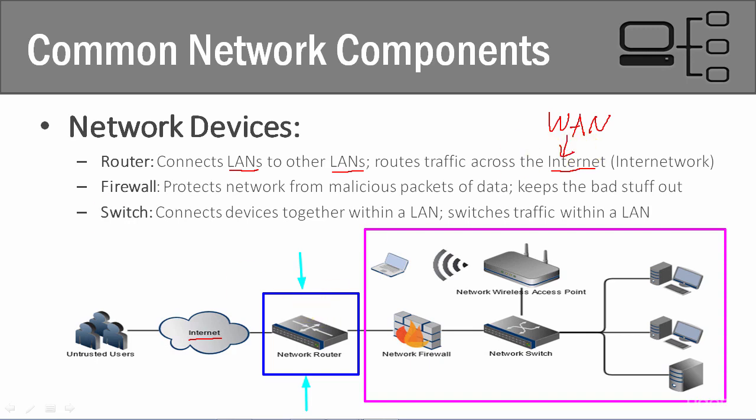Now let's talk about the firewall. Here's our firewall — you'll notice that we have our local area network and right on the inner edge border of our network is a firewall. As its name implies, it keeps fires out. From a networking and cybersecurity perspective, a fire is malicious data. So we're trying to keep hackers out and keep all their malicious hacking attempts out of our network — preventing malware and unauthorized access.